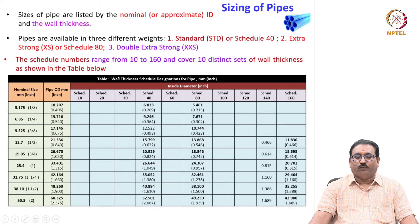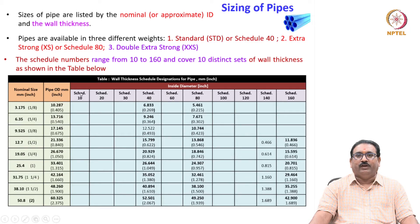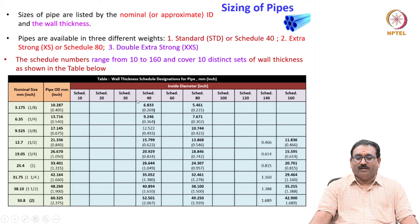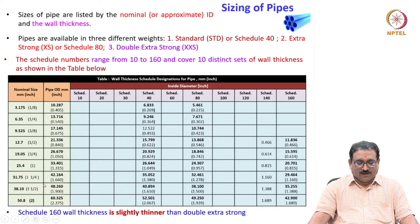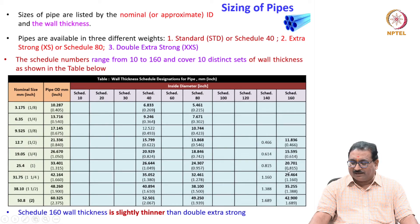This table shows the nominal diameter in millimeters and inches, the pipe OD, and schedule numbers 10, 20, 30, 40, 60, 80, 100, 120, 140, and 160 — these are the 10 distinct sets — along with the corresponding wall thicknesses in millimeters and inches. Note that the Schedule 160 wall thickness is slightly thinner than the double extra strong pipes.